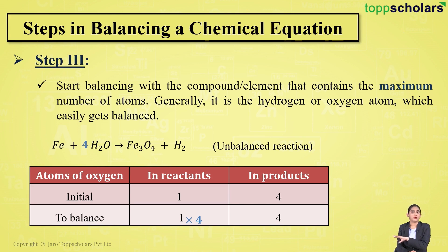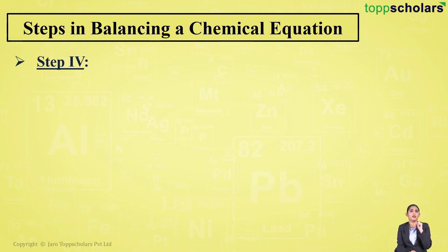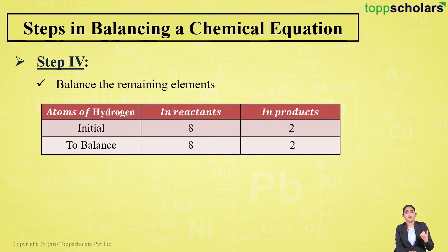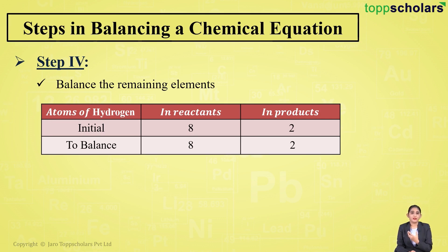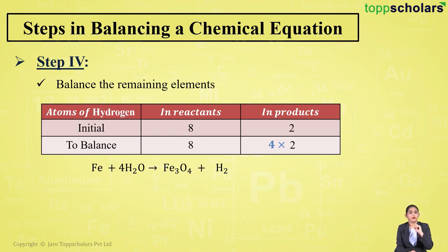Initially there were two hydrogen atoms on the reactant side, but adding coefficient four changes the hydrogen count to eight (4 × 2 = 8). Now the reactant side has eight hydrogen atoms but the product side has only two, so hydrogen is unbalanced. To fix this, add coefficient four to hydrogen on the product side, making it eight hydrogen atoms.